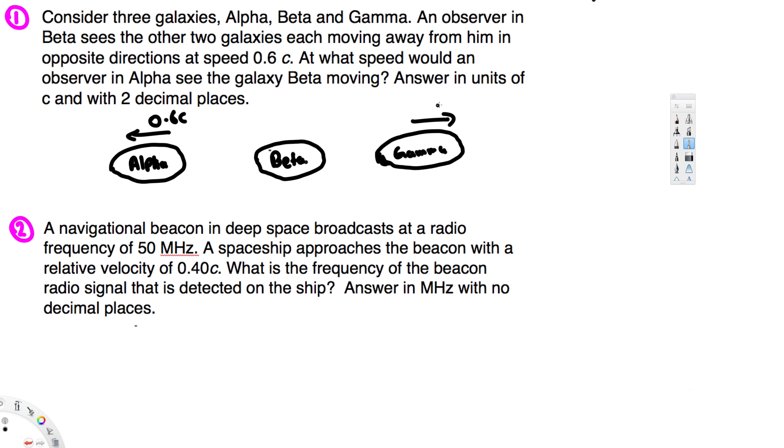Also, Gamma is moving away from him, that is also 0.6c, right. And the question is asking: if an observer from Alpha versus Beta, what's going to be the speed? What's Beta going to look like? And actually, these three are moving away from each other, right, so these three are moving away from each other.